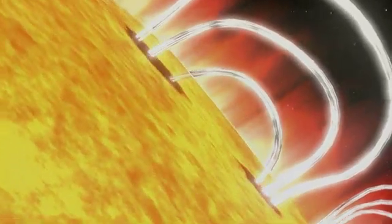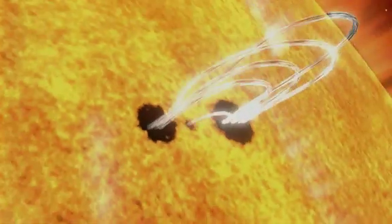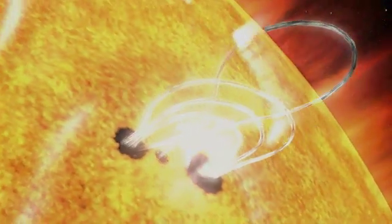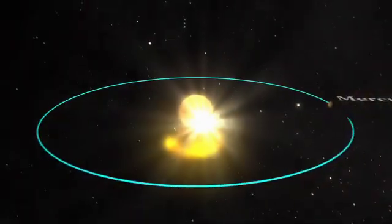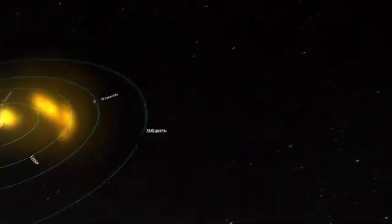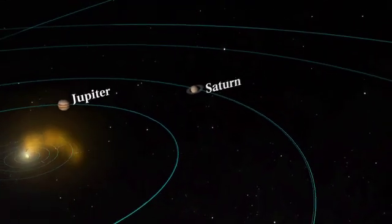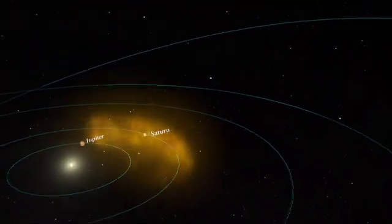The number of sunspots is important because sunspots are the visual markers of where powerful magnetic fields have emerged from the Sun's interior. These magnetic fields power solar flares and coronal mass ejections, which can affect Earth and other objects in the solar system. As the sunspots increase, so does the frequency and severity of flares and CMEs.